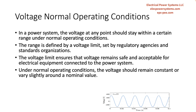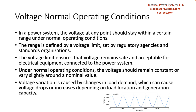Under normal operating conditions, the voltage in a power system is expected to be constant, or to vary within a small range around a nominal value. This variation is typically due to changes in load demand, which can cause voltage drops or increases, depending on the location of the load and the available generation capacity.